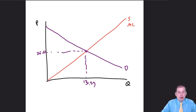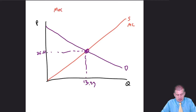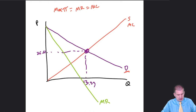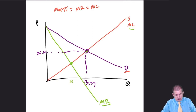Because this firm is a monopolist, they don't produce at the social optimum. To maximize profit, they follow MR equals MC. Their marginal revenue curve crosses marginal cost at Q equals 10, with a corresponding cost of $20. So the firm should be producing at that point — only 10 books at $20 — rather than the socially optimal 13.333 books.